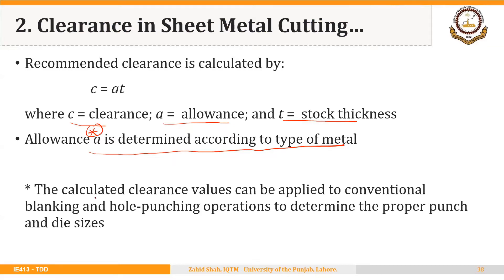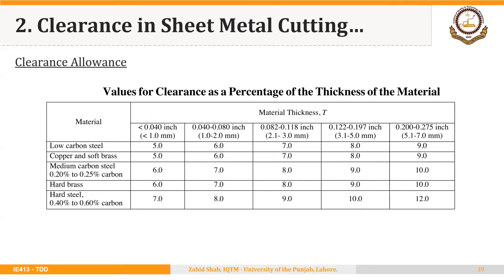We will come back to how clearance is used to determine the size of the punch and die in a following slide. This table from Machinery's Handbook gives clearance values as a percentage of material thickness. For example, if the thickness is less than 0.04 inches and the material is low carbon steel, the clearance is five percent of the thickness. For thickness between 0.04 to 0.08 inches, the clearance is six percent.